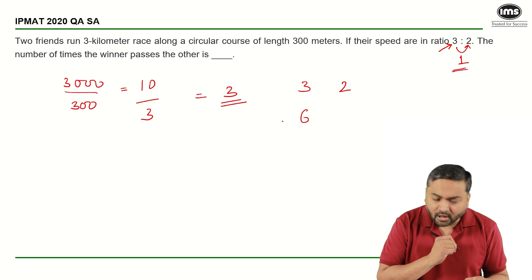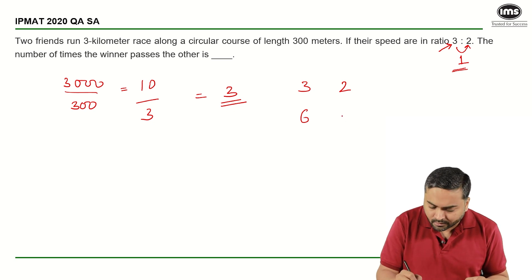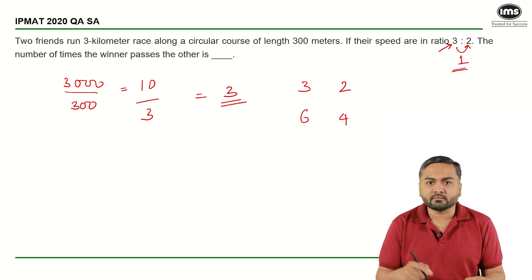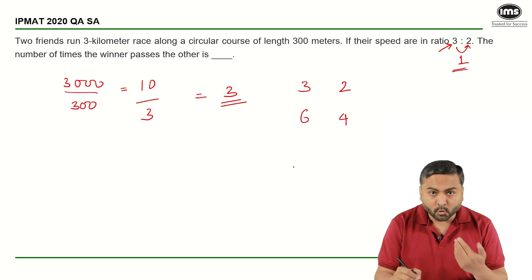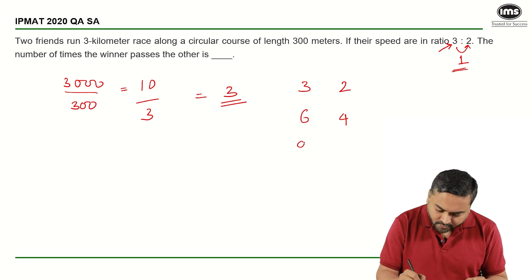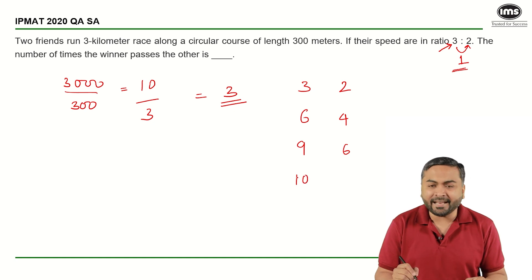When this fellow travels another 3, the slower would travel 4 total and they will meet 2 times. Then this will travel 9 and 6, and now by the time this person has traveled 10, that is one third, okay?